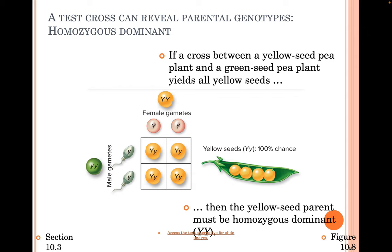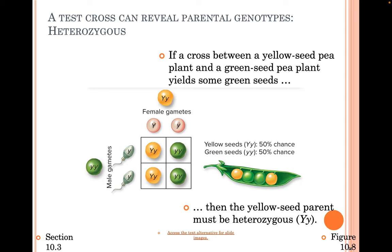A test cross can reveal parental genotypes. If a cross between a yellow-seeded pea plant and a green-seeded pea plant yields all yellow seeds, then the yellow-seeded parent must be homozygous dominant. If the cross yields some green seeds, then the yellow-seeded parent must be heterozygous — because the only way green-seeded offspring appear is if they receive a lowercase y from the yellow parent.